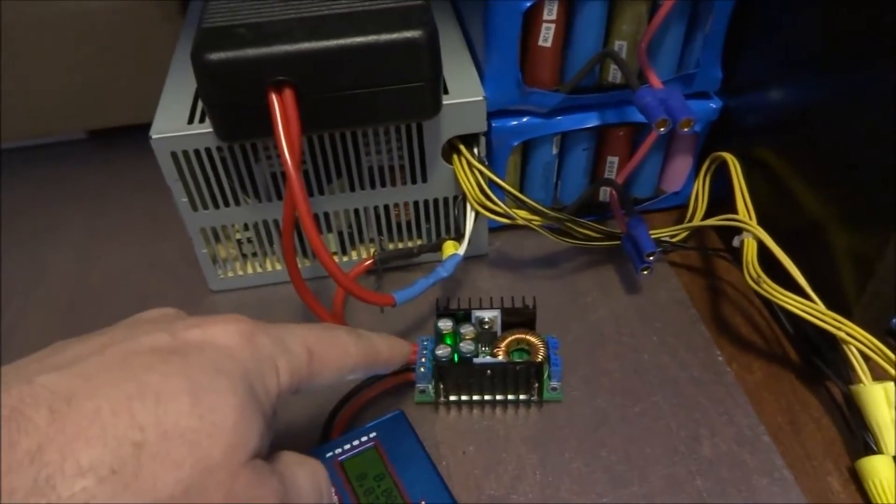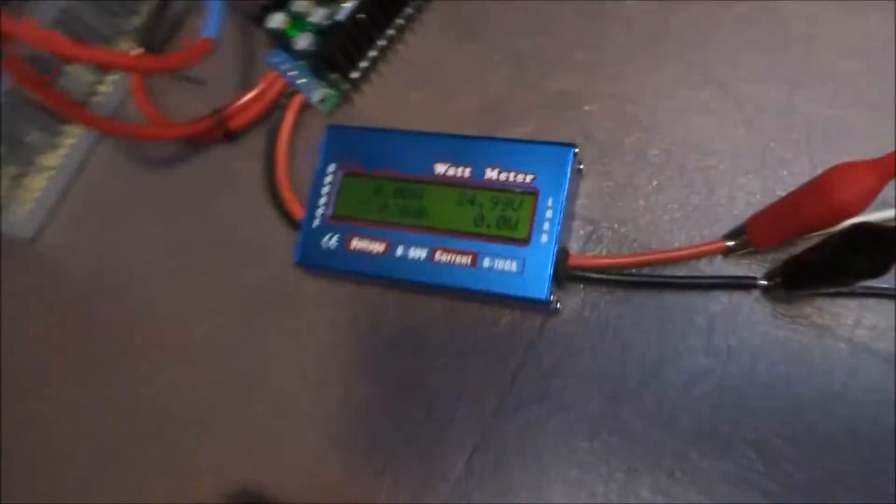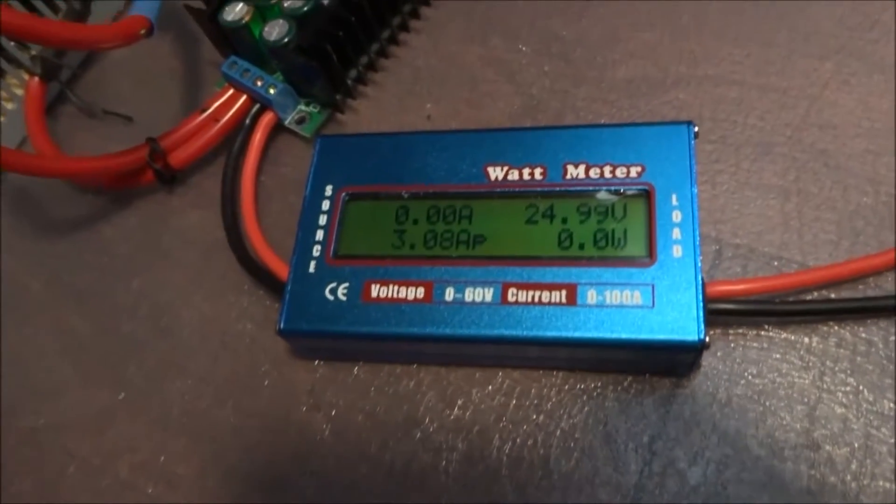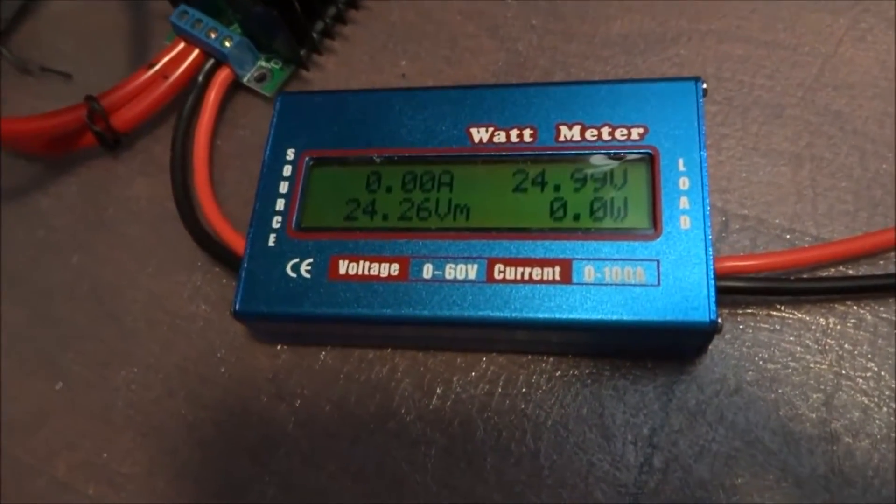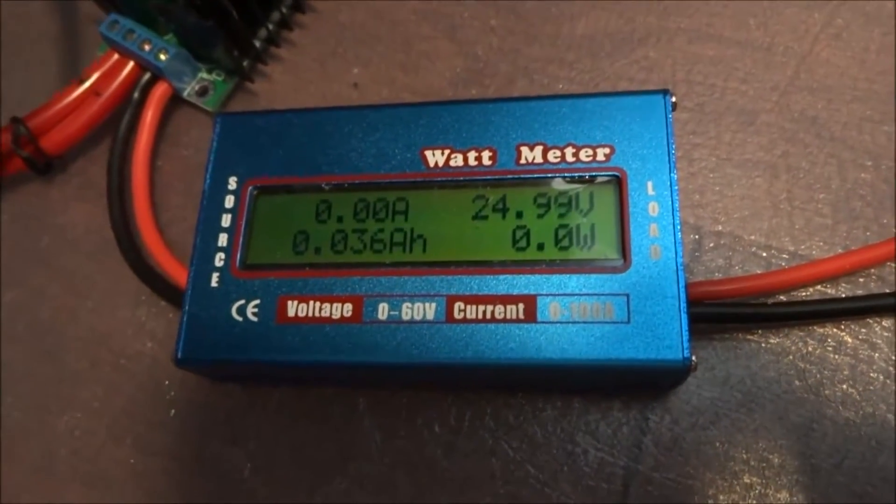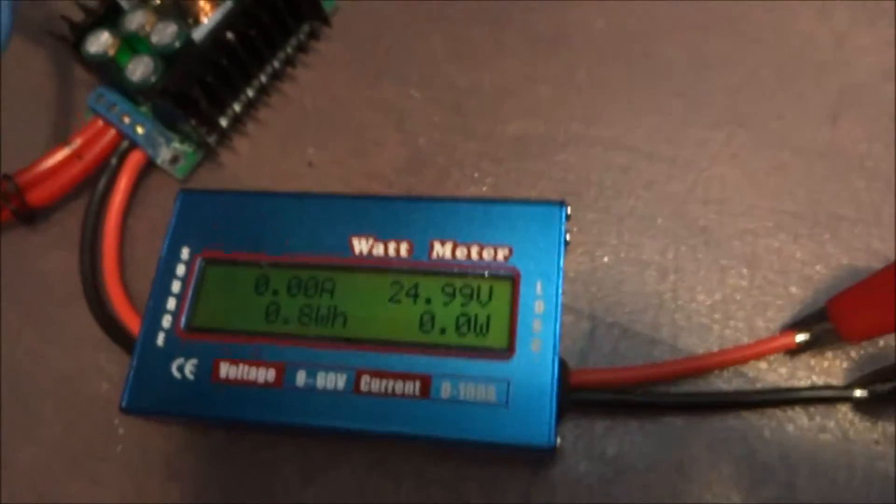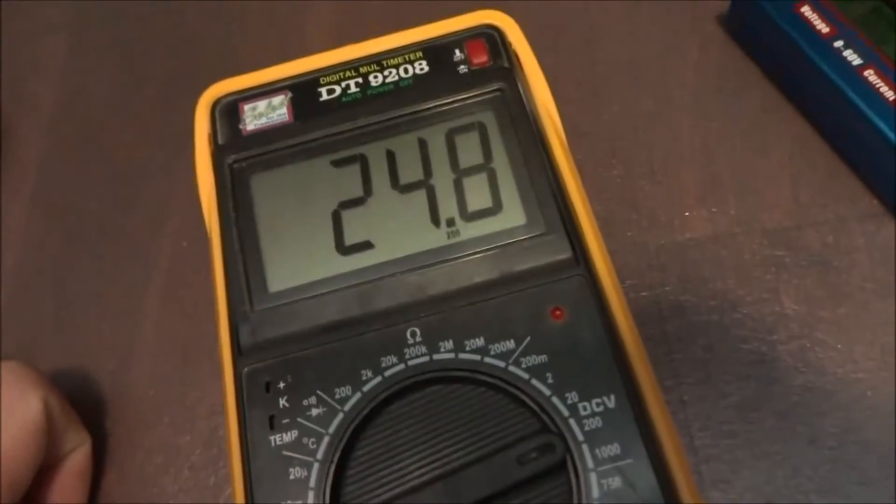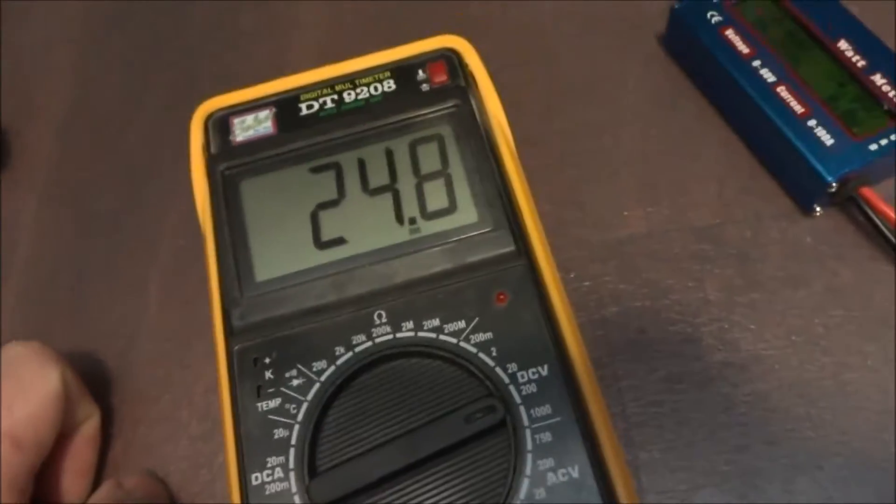And then on the output side, I wired one of these cheap hobby watt meters. So currently you can see that I have zero amps, 24.99 volts. These are probably not very precise. My voltmeter is telling me I got 24.8, which is what I want.